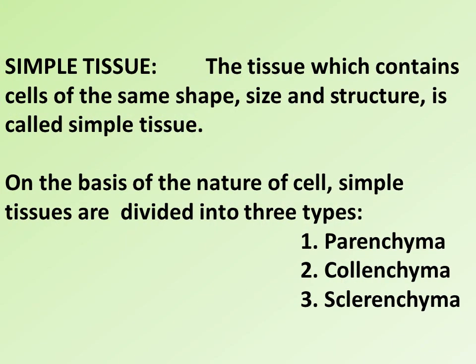Next is simple tissue. The tissue which contains cells of the same shape, size, and structure is called simple tissue. On the basis of the nature of the cell, simple tissues are divided into three types: number one, parenchyma; number two, colenchyma; and number three, sclerenchyma.